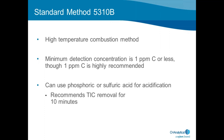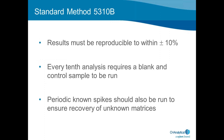When determining method parameters, combustion is preferential for organic carbon that contains suspended material. Persulfate oxidation generally provides better sensitivity and can remove residuals much easier than combustion, where they can build up in the tube. In Standard Method 5310B, the minimum detection concentration is one ppm or less — one ppm carbon is highly recommended. Periodic known spikes should be run to ensure recovery of unknown matrices. The laboratory control sample must be different from the calibration standards but from a similar matrix. Results must be reproducible within ±10%, and every 10th sample requires a blank and a control sample.